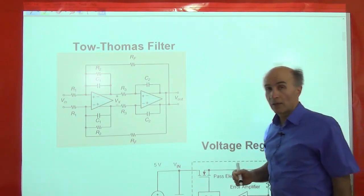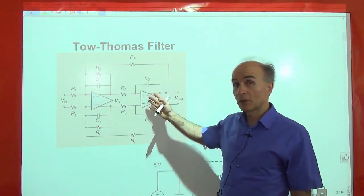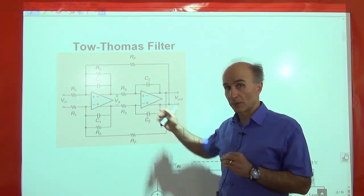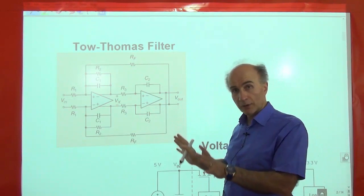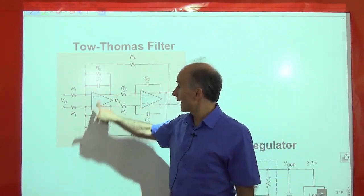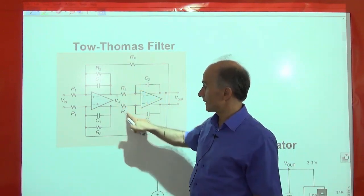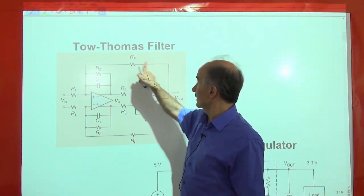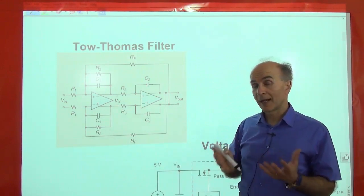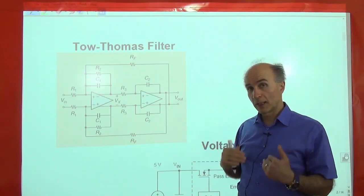Here's an example of what we call the Tau-Thomas filter. This is an analog filter used in many applications. This was introduced in the 1960s, but even today, we have wide usage for the circuit. Without going through what the circuit does, you can see that we have two op-amps here. We have capacitive feedback, resistive feedback. We have capacitive feedback here. You can identify this as an integrator, and then we also have resistive feedback here. So lots of feedback paths. Studying the circuit, understanding what it does, understanding its issues, are all critical components for today's electronic design.